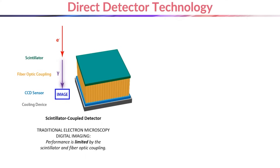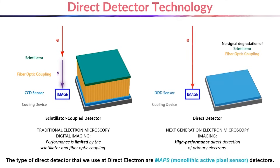Direct detectors with radiation hardened sensors that can be exposed directly to electrons to form an image were developed to overcome the limitations of scintillator cameras. The type of direct detector technology used at Direct Electron is called MAPS, which stands for monolithic active pixel sensor.